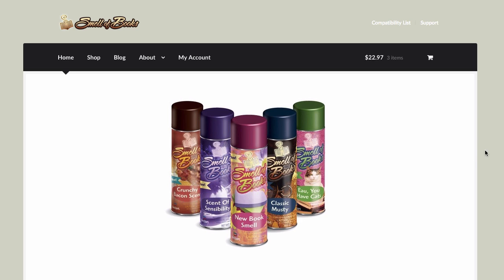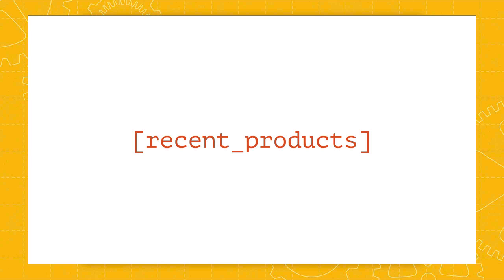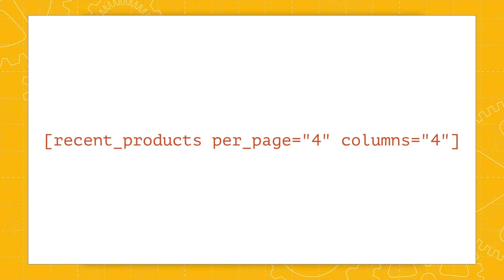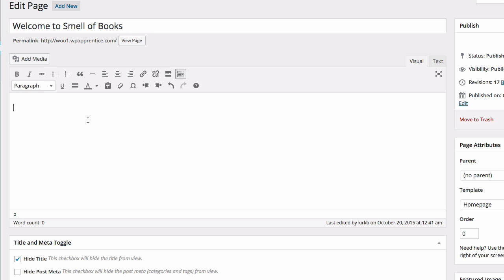I'm still not sure about the top part of my homepage, and I'm thinking I might want to try a shortcode up here in place of this image. The one I have in mind is called recent products — it looks like this: recent_products. I can add some additional arguments to specify the number to show per page and the number of columns. In this case, I'm going to limit four per page and display them in four columns. I'm editing the homepage, removing this image just for now, and pasting in my shortcode that I've already prepared.